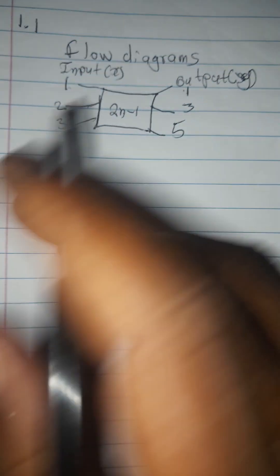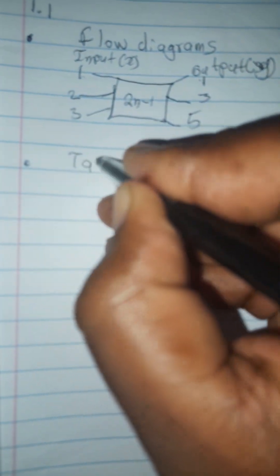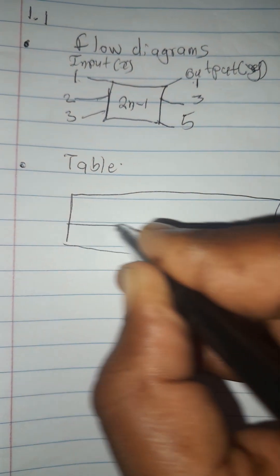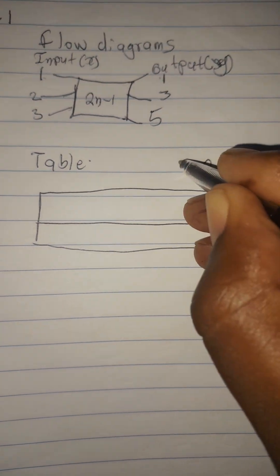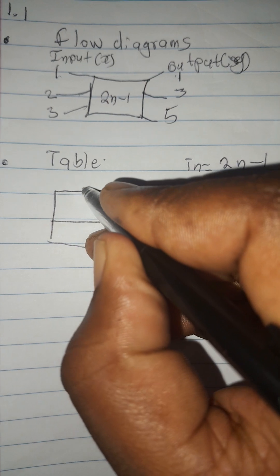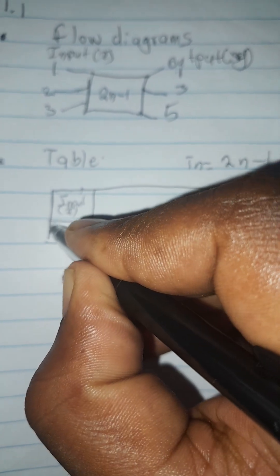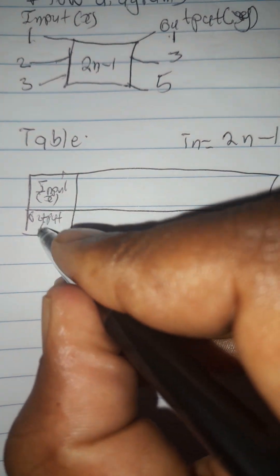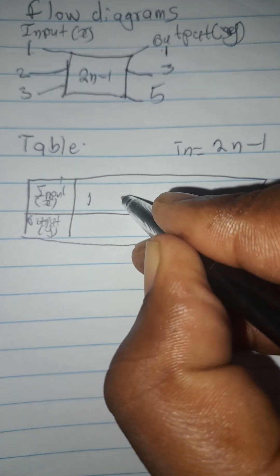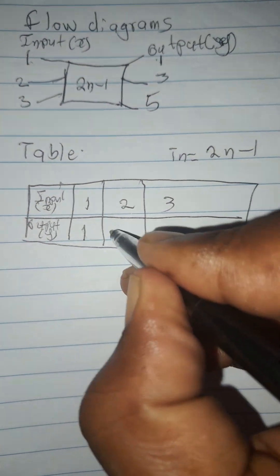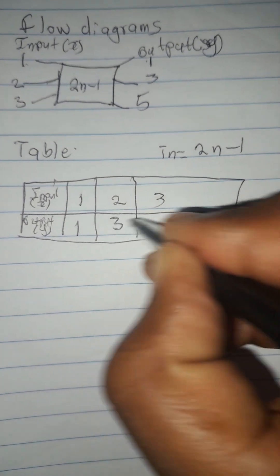Remember, I said mention 5 ways and use examples to describe. That's our number 1. Number 2 — we said it can be represented in a table. Let's use the same rule. Here, the inputs in terms of x are 1, 2, 3, and so on, and the outputs in terms of y will be 1, 3, and 5 respectively. That's how you represent a pattern in a table.